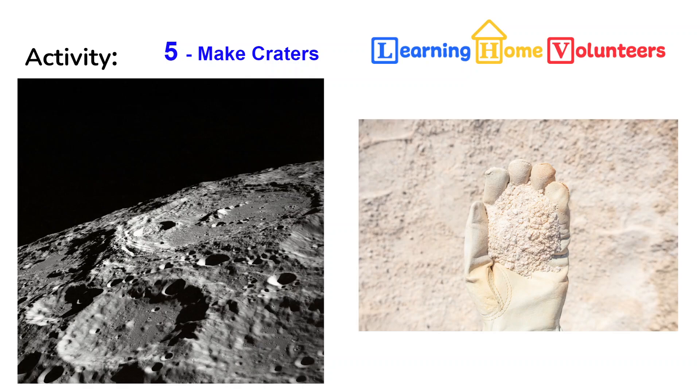This is activity number five, making craters. Have you ever wondered what caused the craters on the moon? Did you know that the moon is dusty and powdery like what you see the astronaut actually holding here on the right hand side? Craters are caused by meteors and rocks striking the moon.